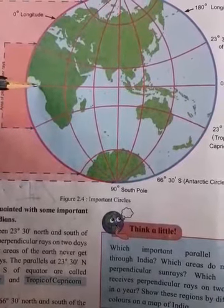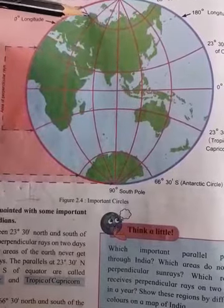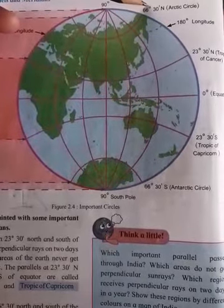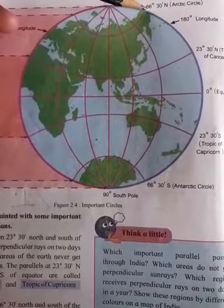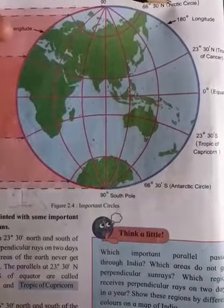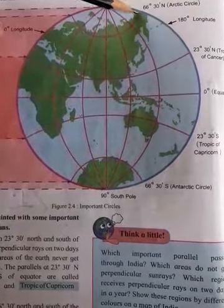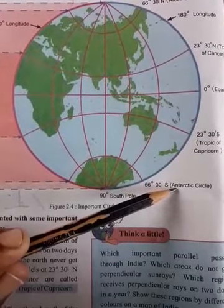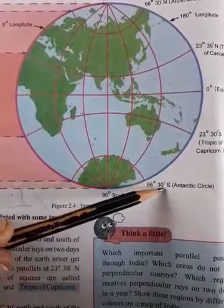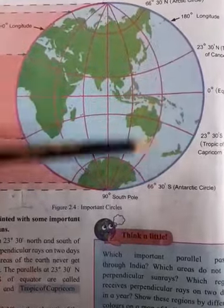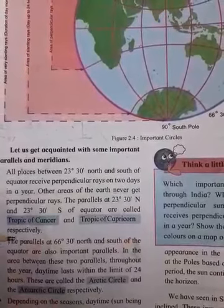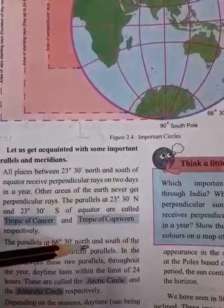Looking at the figure, you can see the Tropic of Cancer, the Tropic of Capricorn, and the area where perpendicular rays fall. Near the polar region, at 66 degrees 30 minutes north, is the Arctic Circle. At the same angular distance, 66 degrees 30 minutes south, is the Antarctic Circle. These are the important parallels at 66 degrees 30 minutes north and south of the equator.